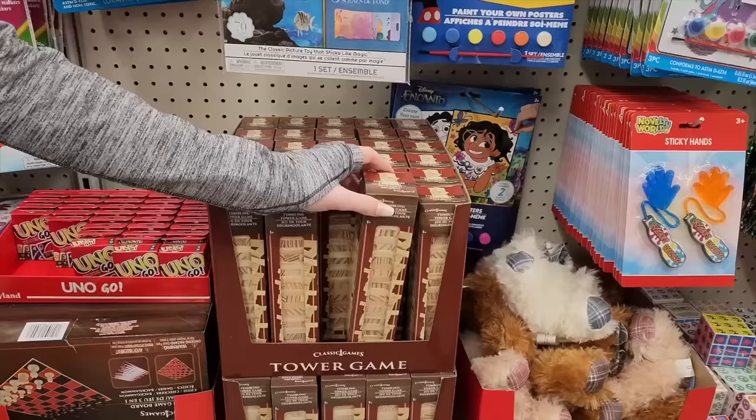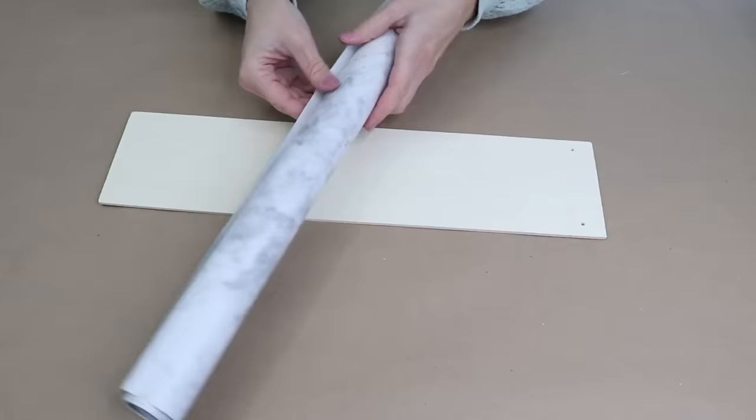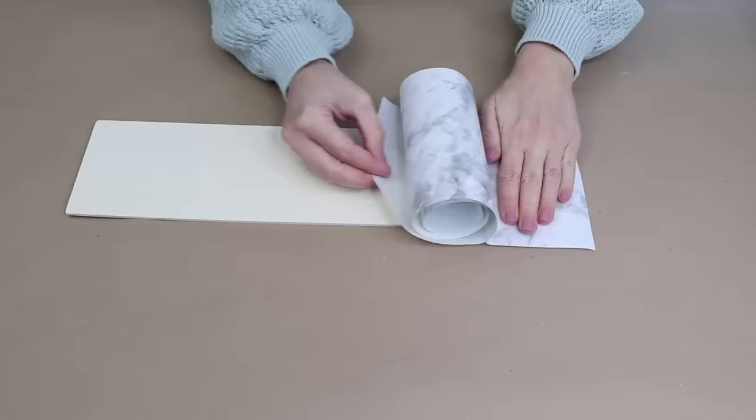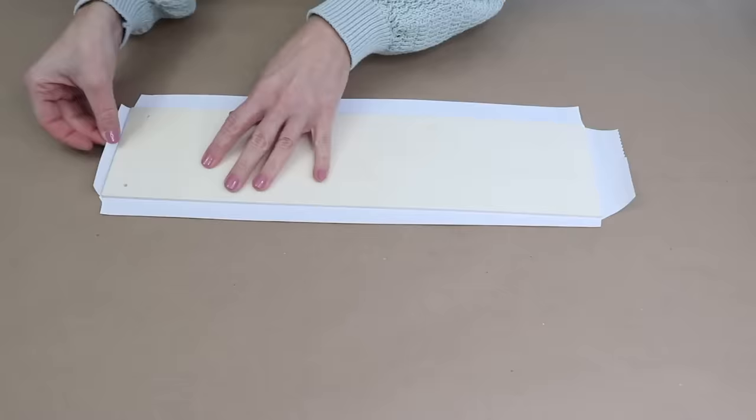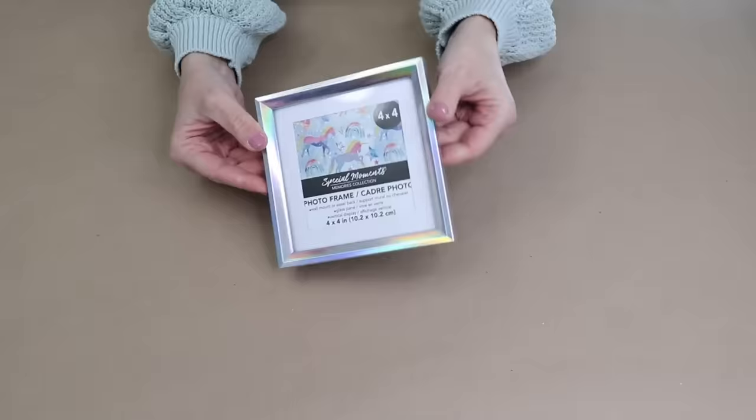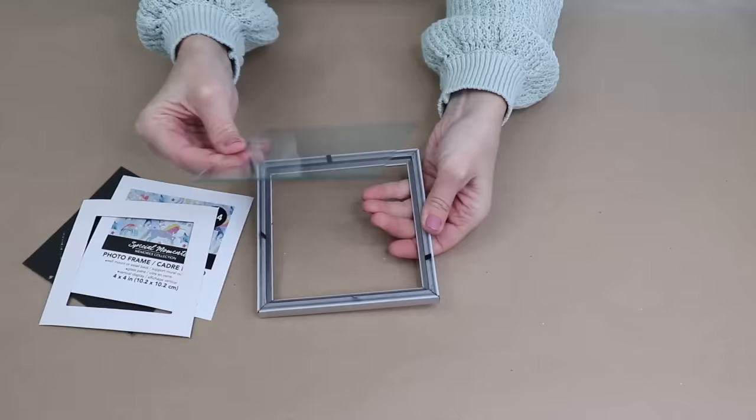I grabbed two of these wood hangers. I'm pulling off the rope. I'm going to cover the front of the wood piece with the shelf liner and then fold the edges over the sides. Grab four picture frames. These square ones work best.